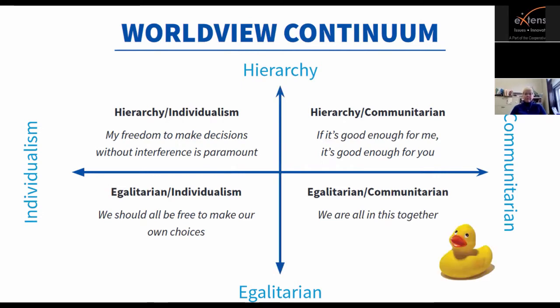Those two lines create four categories — most people are toward the middle rather than the edges. Someone who's more egalitarian and communitarian tends to view that we're all in this together and need to work as a community for the common good. Whereas someone who is hierarchical and individualistic thinks they need to take personal responsibility for their own actions. Ultimately, worldview is one of the key ways it affects whether or not we view something as a risk.